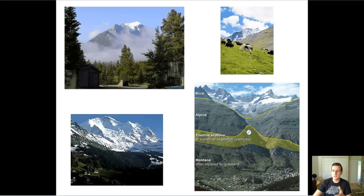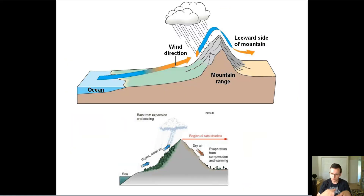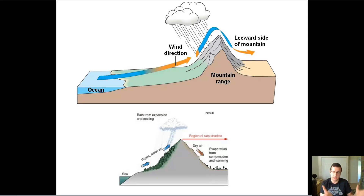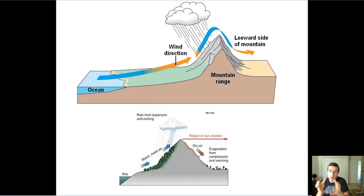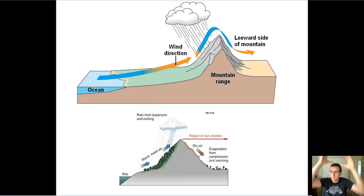Another thing that topography does that relates to temperature is the idea of rain shadow. Mountains block the flow of air and water around the ecosystem. If you have an ocean with a lot of clouds and rain, as the wind blows those things toward the mountains, the mountains force the clouds to rise. As the clouds rise they get colder, and as they get colder they expand, get heavier, and fall as rain. The fact that they've been elevated actually causes even more rain to form, and the clouds get so heavy that they end up raining down.